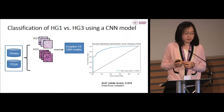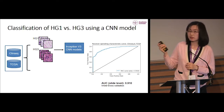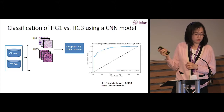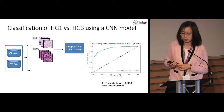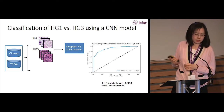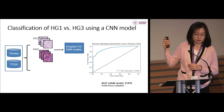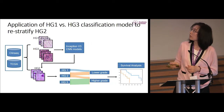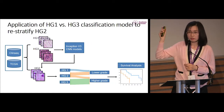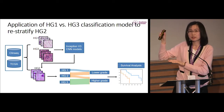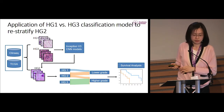After obtaining the tumor regions from both cohorts, we developed an Inception V3 model to classify grade 1 and grade 3, achieving an AUC of 0.91 at slide level using both ClinSec and TCGA data. We then applied this binary classification model to grade 2 cancer slides, splitting them into two subgroups indicating lower and higher risk.